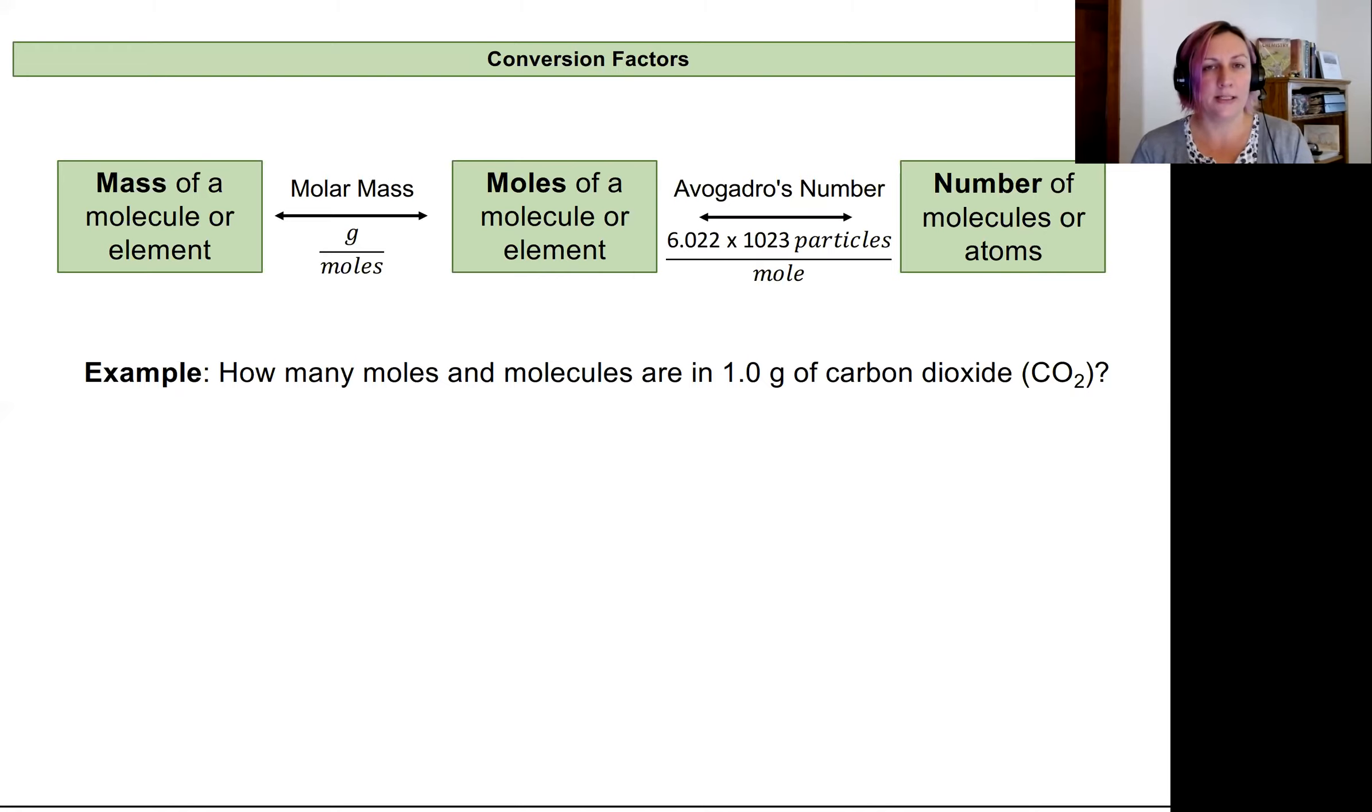And so we're often going to need to know the number of something. And to do that, we will take the mass of it. And so we need to be able to fluidly convert between the mass of something, the number of moles it has, and the number of actual atoms or molecules that that represents. We're going to use molar mass to convert between mass and moles. And if we need to convert between moles and a number of particles, we'll use Avogadro's number instead. These are our two conversion factors that we'll use to go between these values.